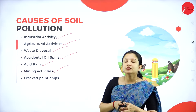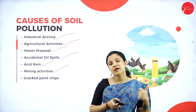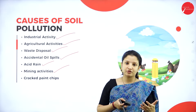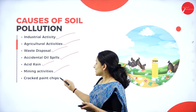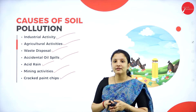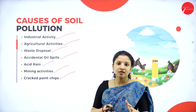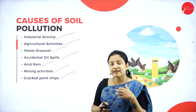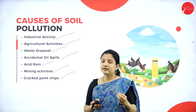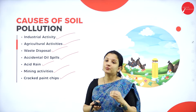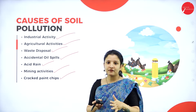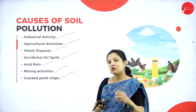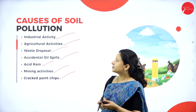Next is mining activities. During mining, a lot of drilling processes are undertaken, and there are chances of toxic chemicals leaching into the soil. Next is cracked paint chips. Paint contains lead, which gives that bright intense shiny color. Lead is one of the most toxic chemical substances on the planet and can lead to many devastating effects. Cracked paint chips that fall from houses onto the ground can also contaminate the soil. These are the different causes of soil pollution.